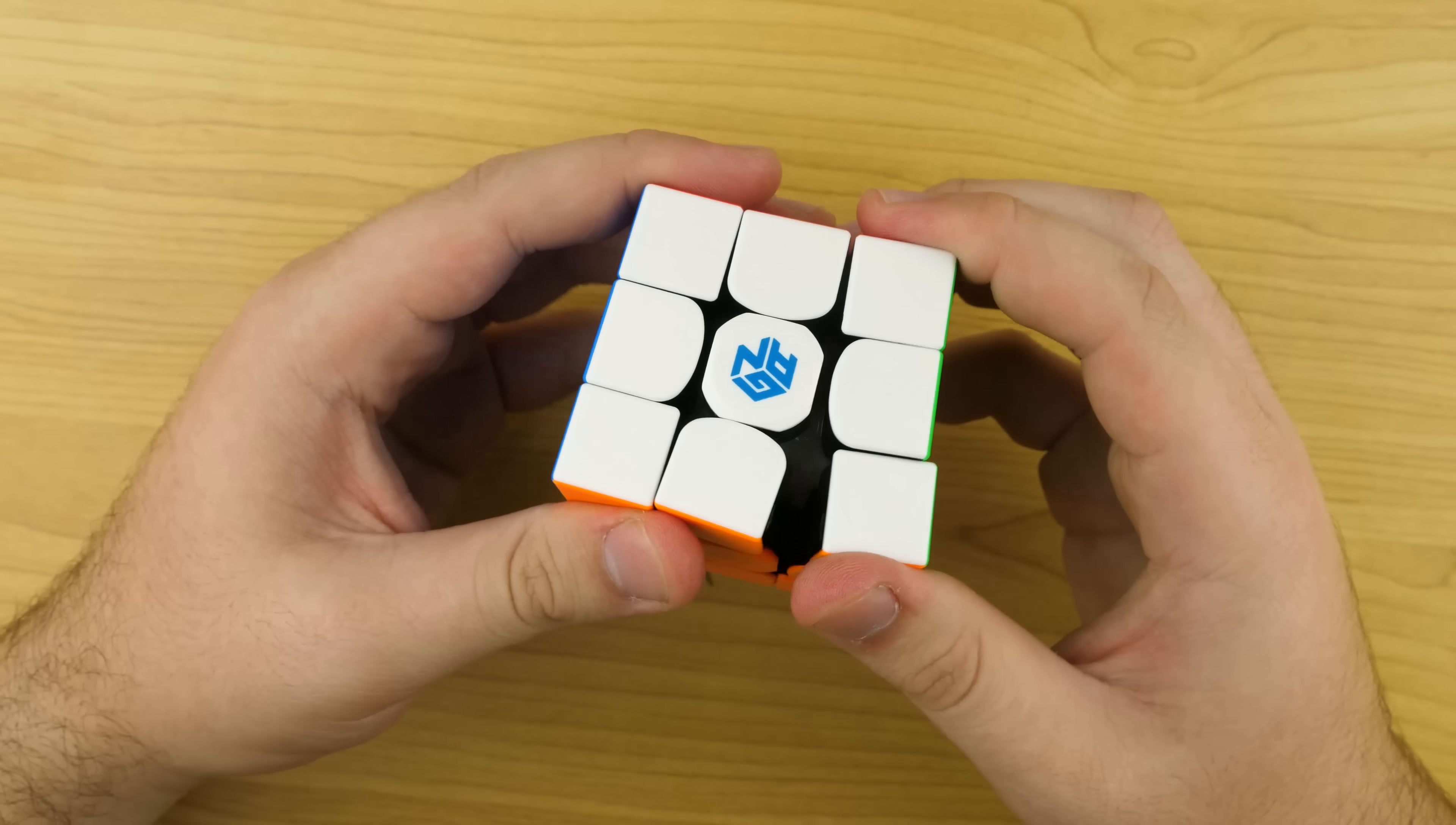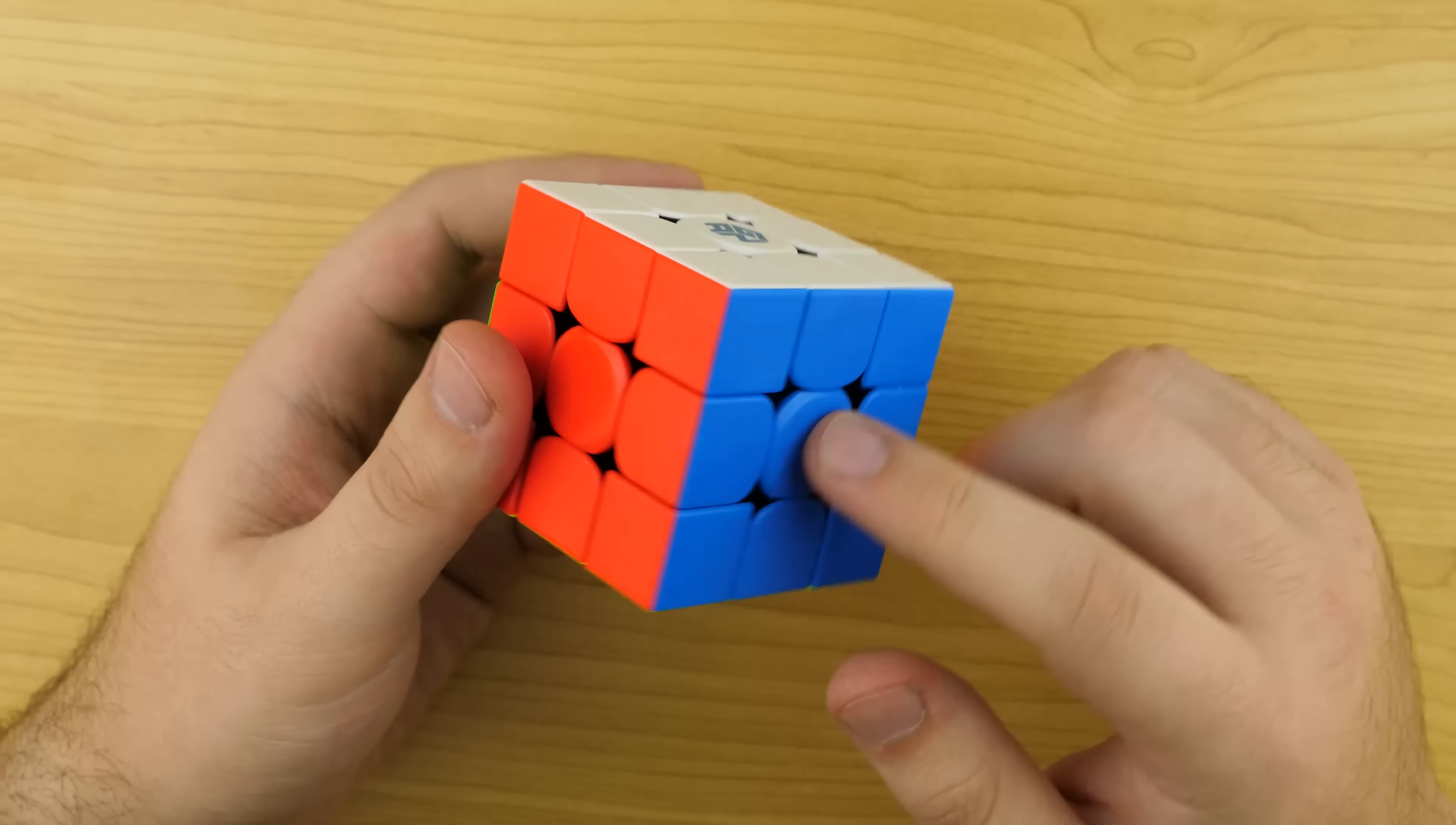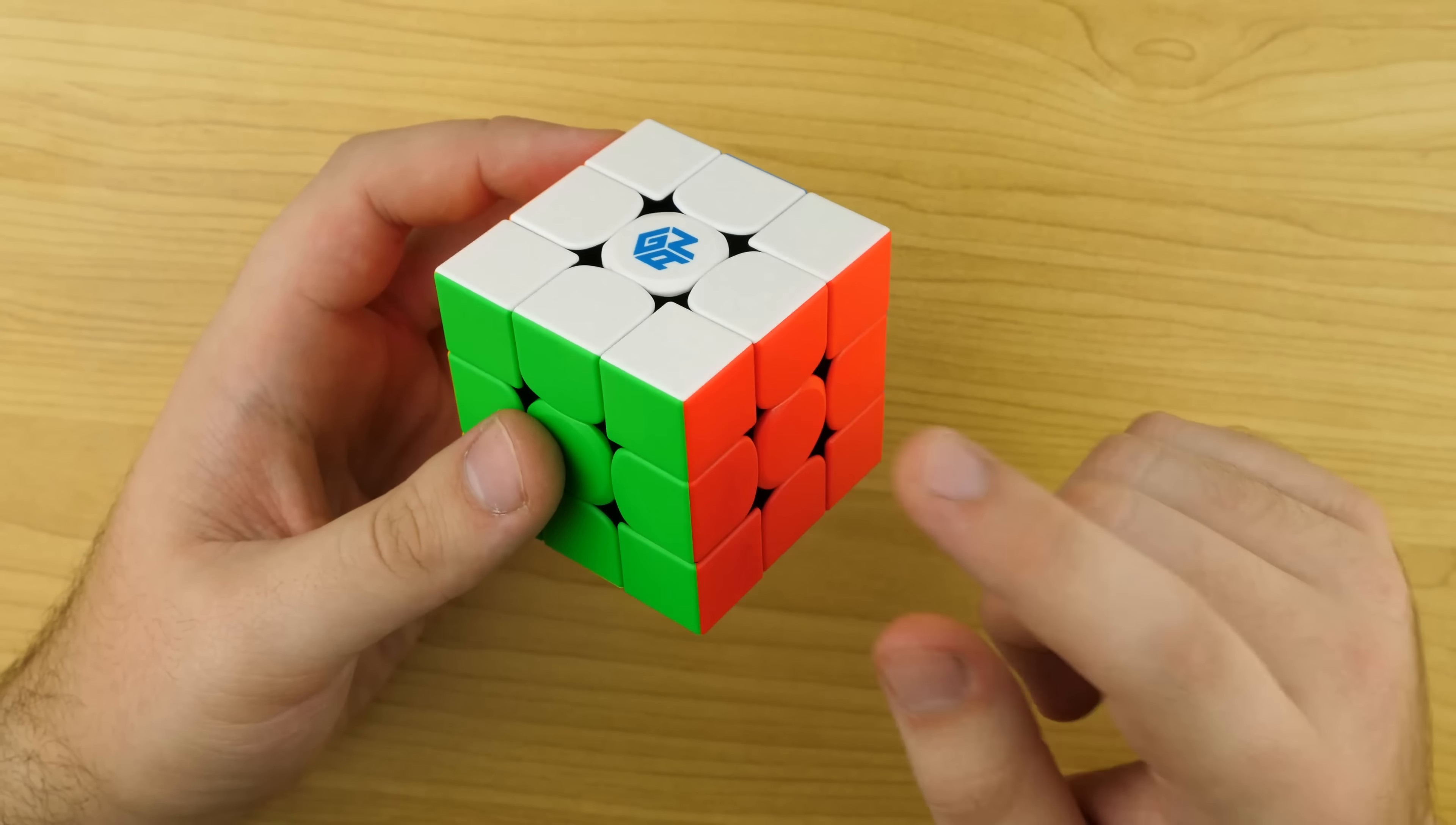Okay, right away the cube feels very impressive. It doesn't feel exactly like the GAN XS, but it's a lot better than the previous version. It feels more stable than the previous version, but less stable than the XS I'd say. Not quite as light. I have to weigh them to see the differences, but right away impressions are really good with this cube.